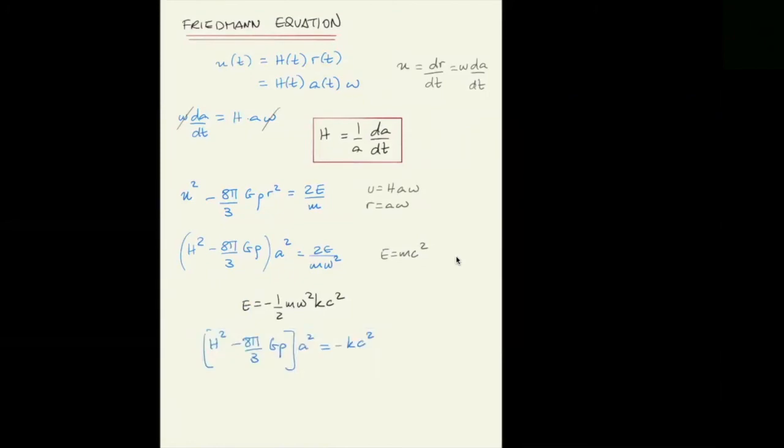Finally, we substitute the Hubble constant by the scale factor, by the definition in terms of the scale factor, and we finally have a differential equation for the scale factor. So this is the Friedman equation. Solving this should give you the evolution of the scale factor.